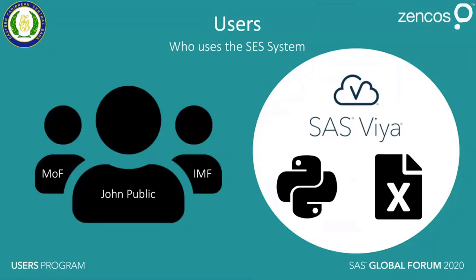We also have the IMF as one of our main users — Ben will elaborate on the built-in Python-based web service API for that. We also have external entities such as the Ministry of Finance, for whom we provide data for monthly reports. Then we have the ECCB website where the public can access predefined reports such as the economic and financial review. These are the types of data we provide to the public.